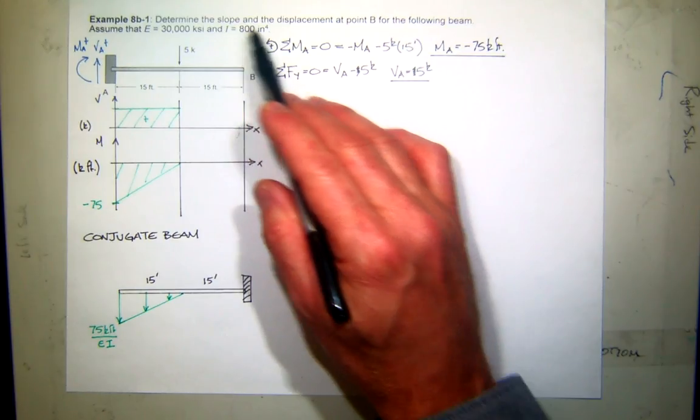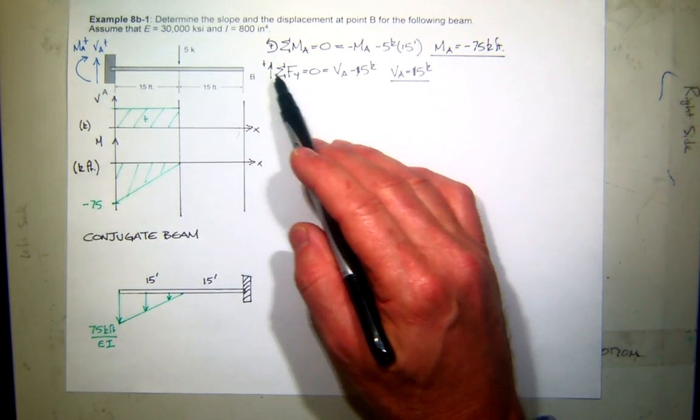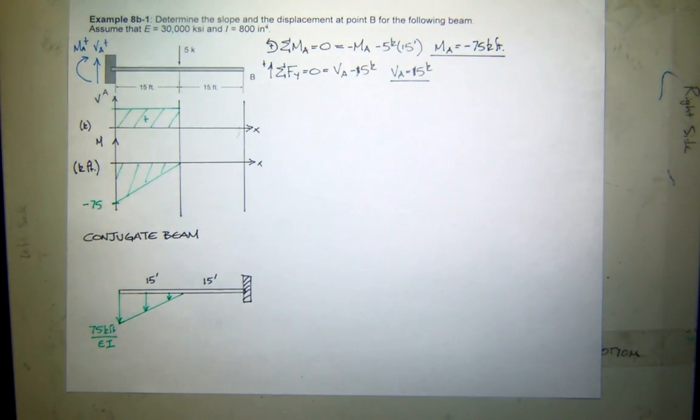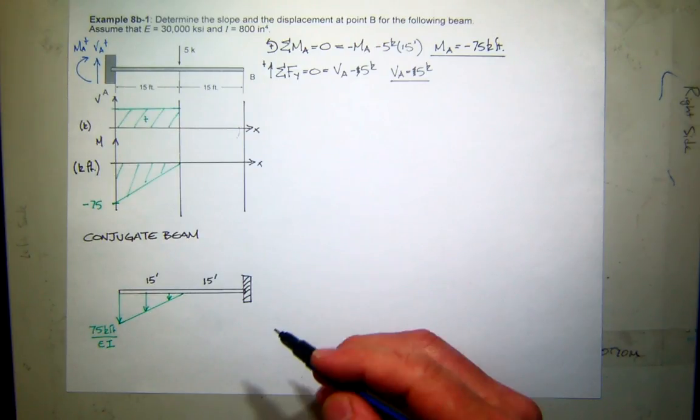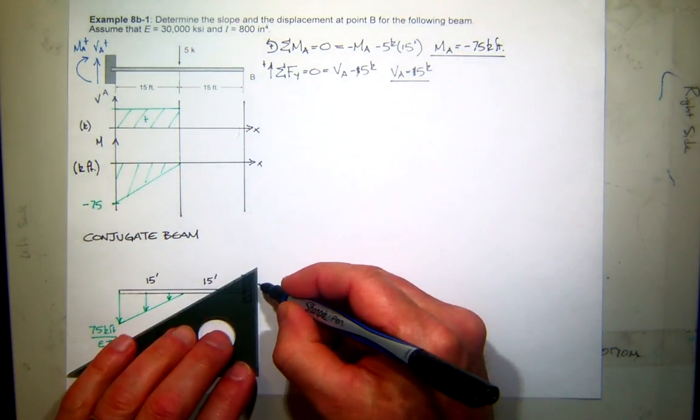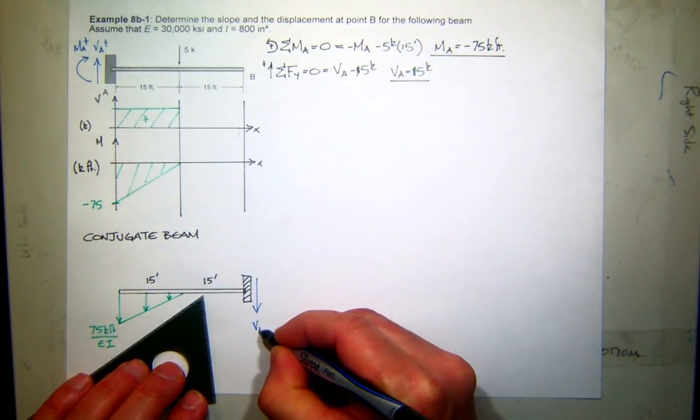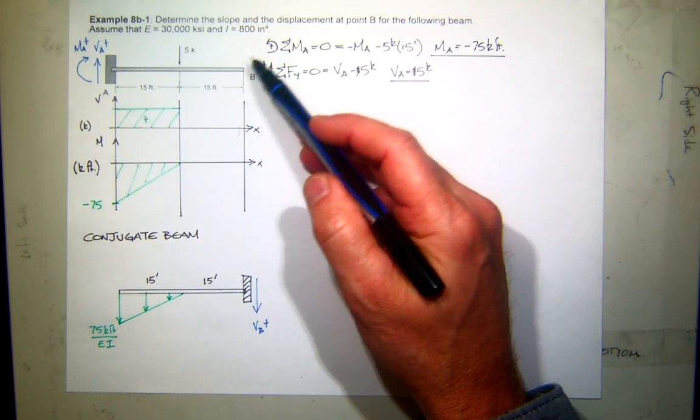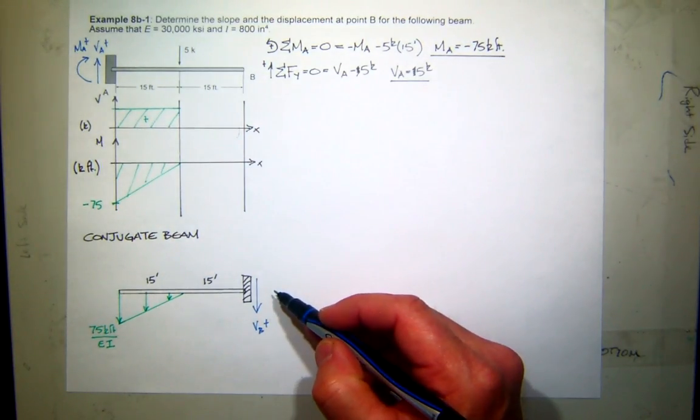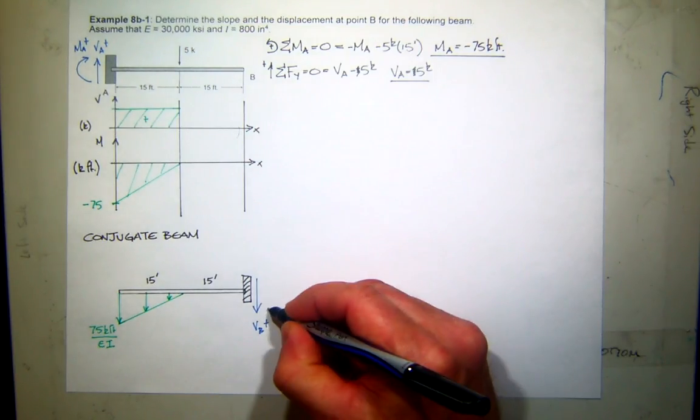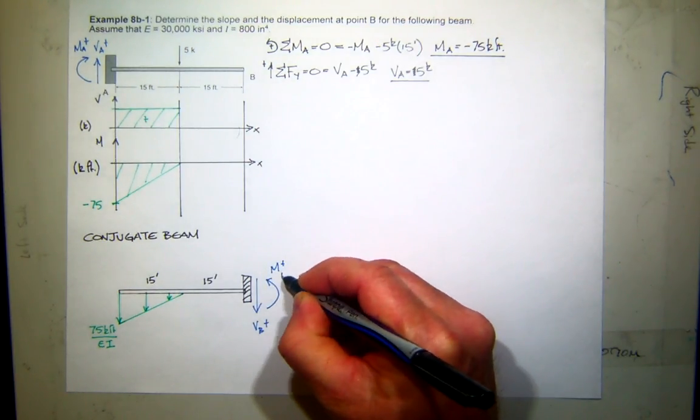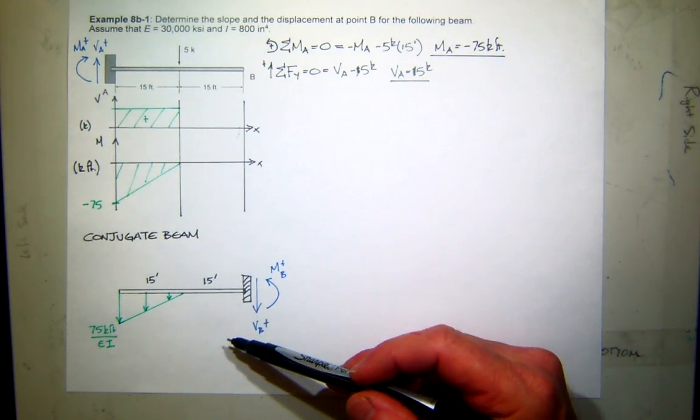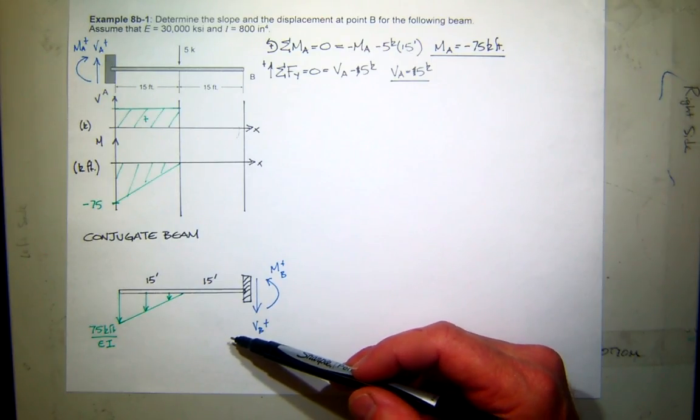Well, the problem originally asked for the slope and displacement at B. That's here. So slope in the real beam is what in the conjugate beam? Shear. And what is positive shear at B? It is down. So if I solve for that, that will give me the slope at B. Now the displacement at B in the real beam is what in the conjugate beam? It is moment. So I'm going to assume positive moment at B. So all I have to do is find these two values. So what is this? This is just finding the reactions of the conjugate beam in this particular problem. That's not so bad, is it? So let's do that.